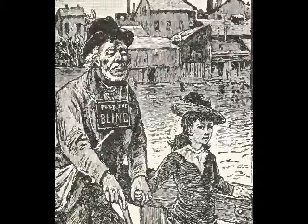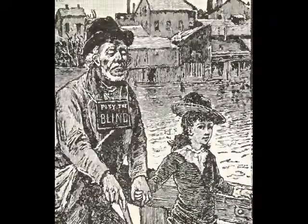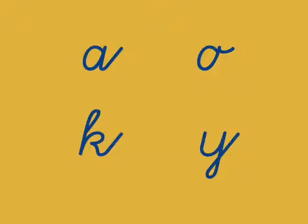You're going to meet a blind man and a little girl named Mary. And we're going to look at four letter sounds today: the A, the O, the K, and the Y.